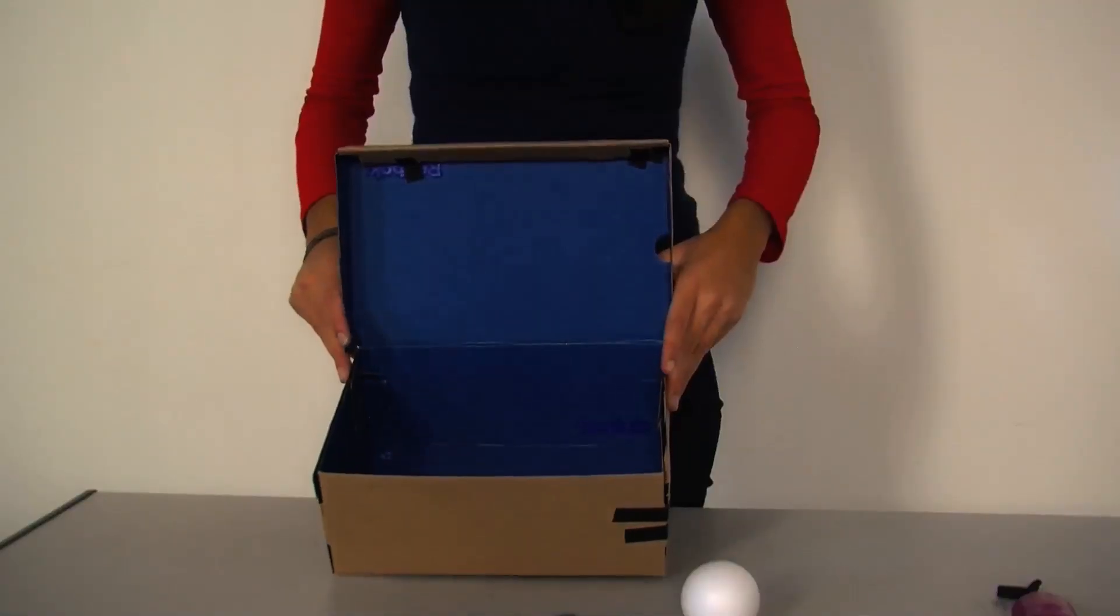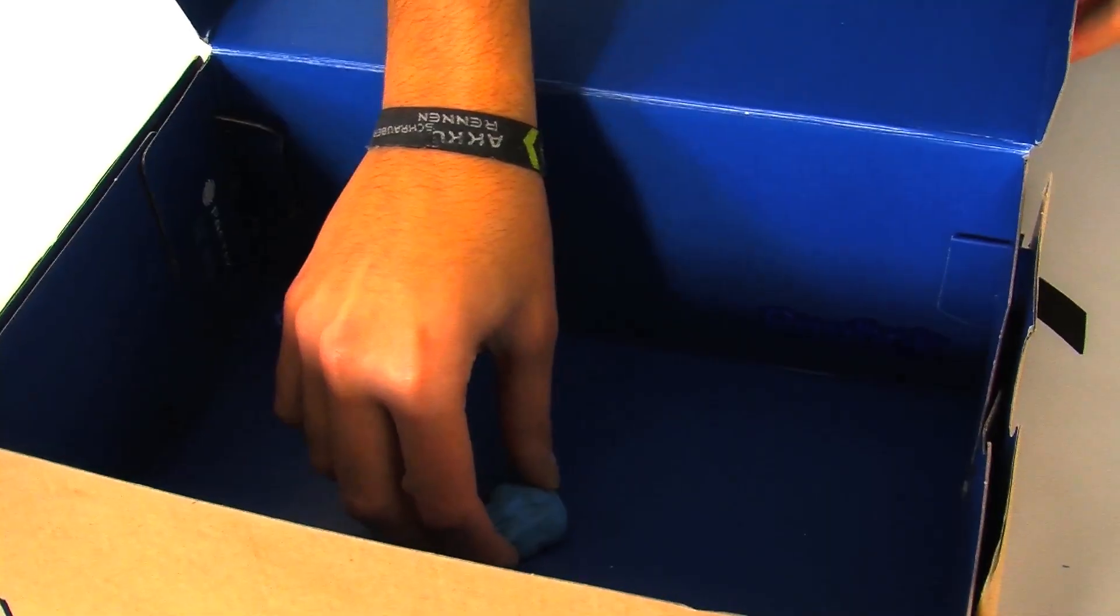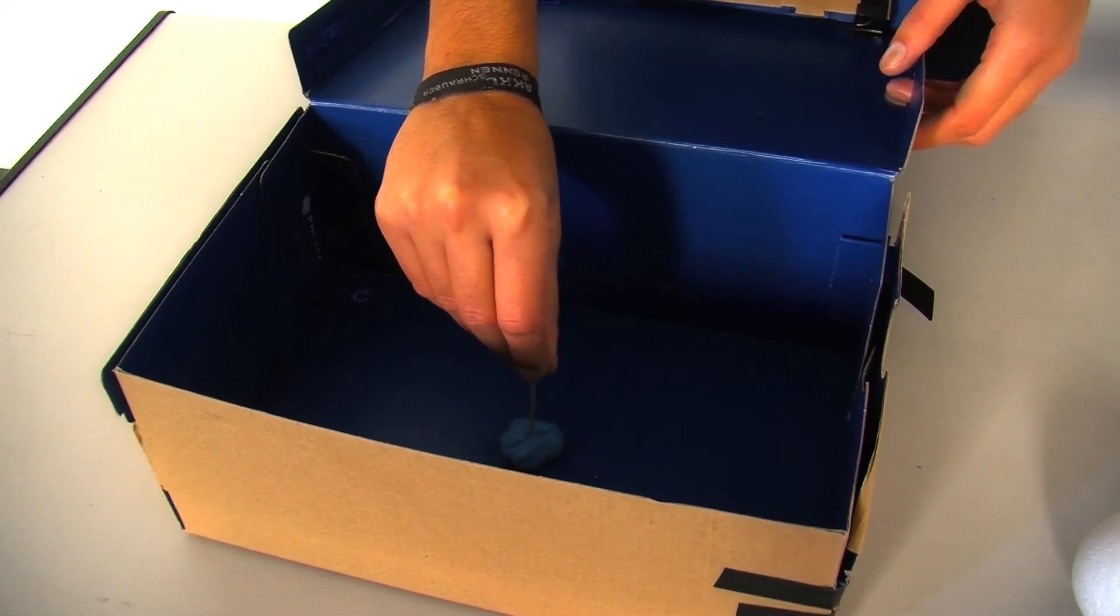Take the plasticine and poke a toothpick into it, and then put it in the middle of the box.